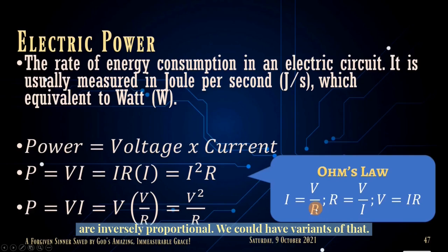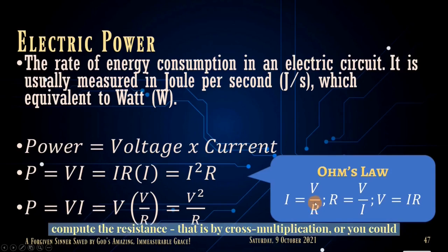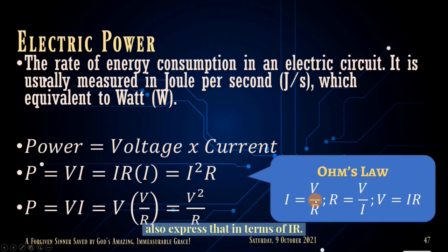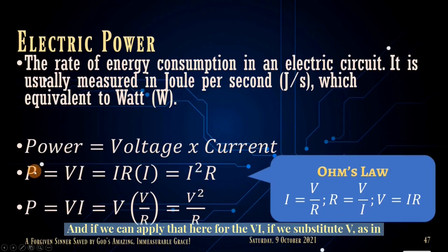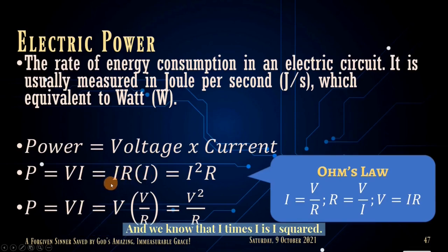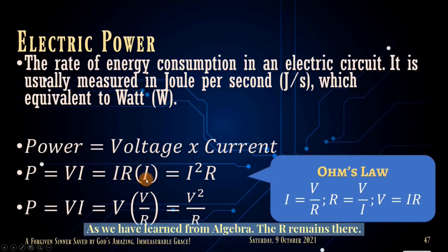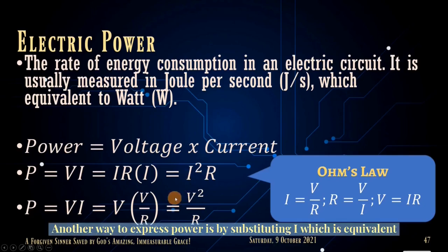We can express variations of the power formula. Resistance R = V/I by cross multiplication, and voltage V = IR. If we substitute V as IR into P = VI, then P = IR × I = I²R. That gives us another way of computing electrical power: P = I²R.